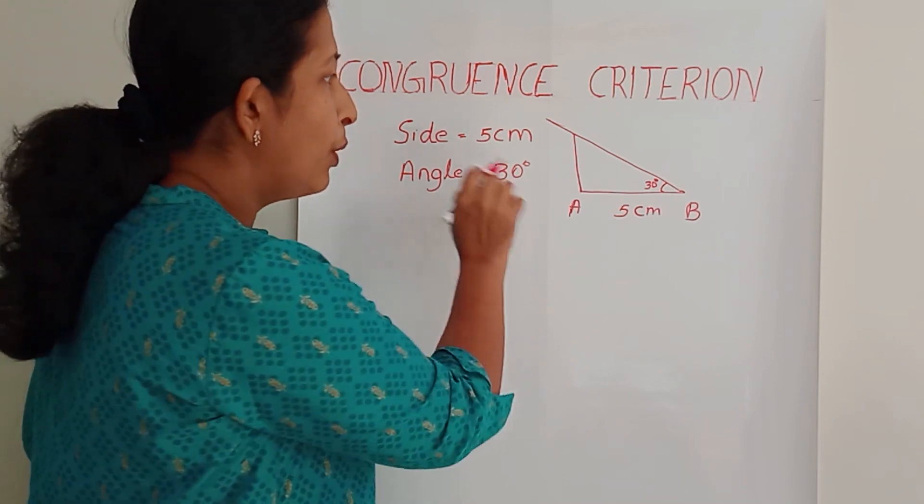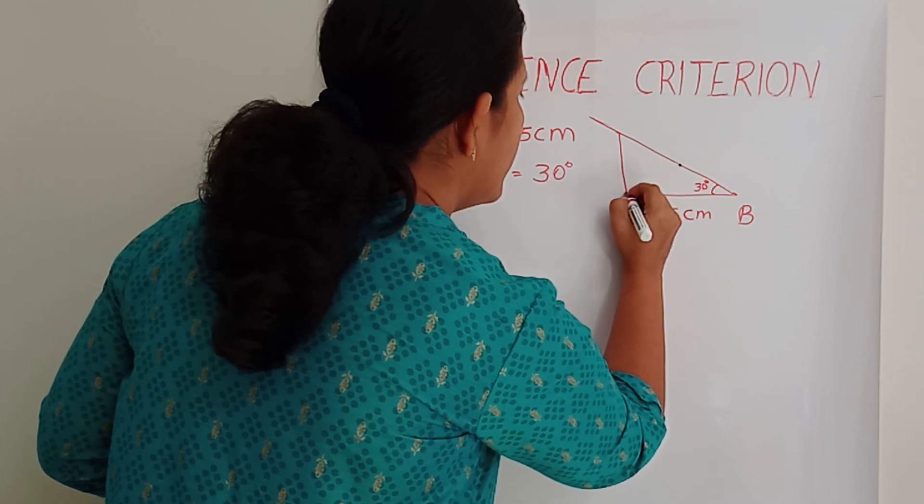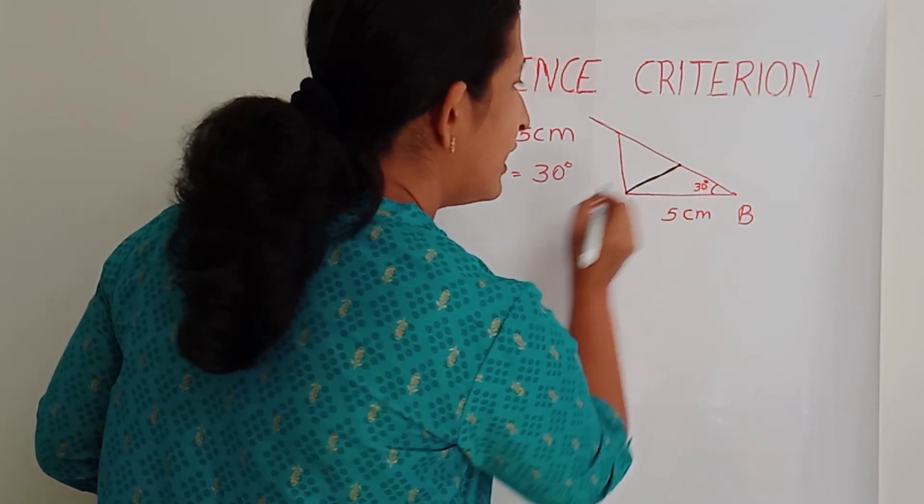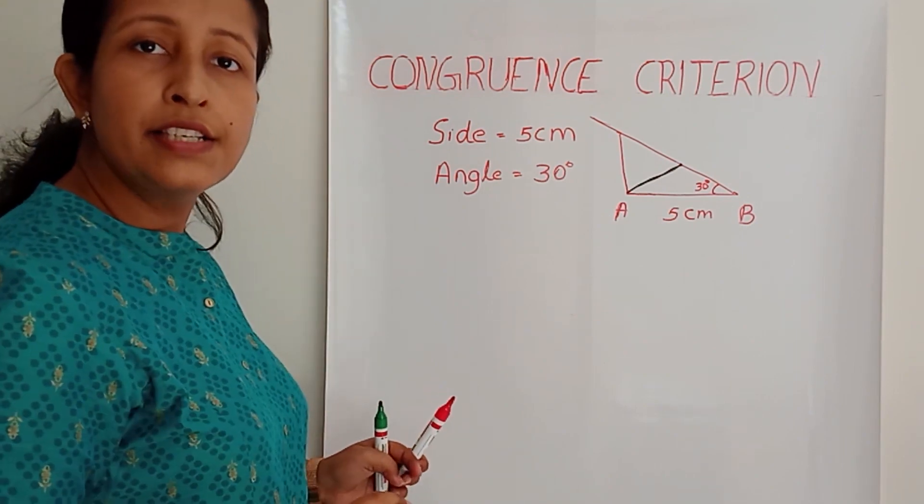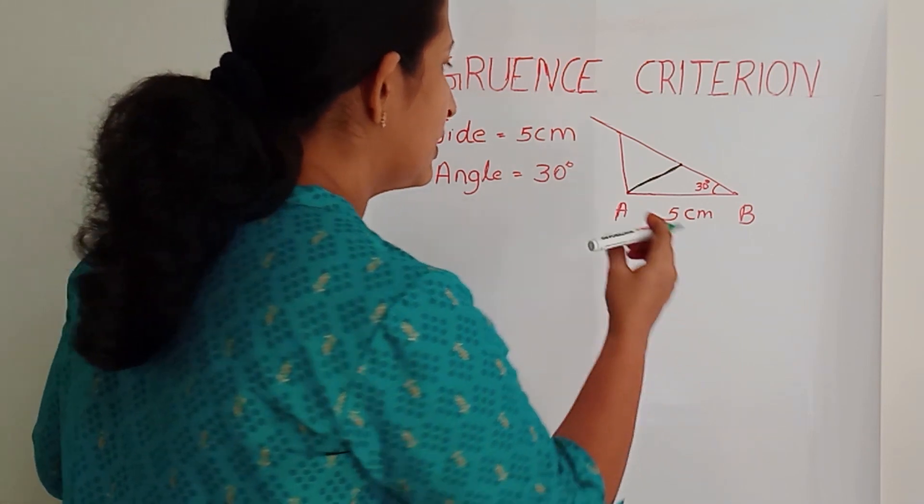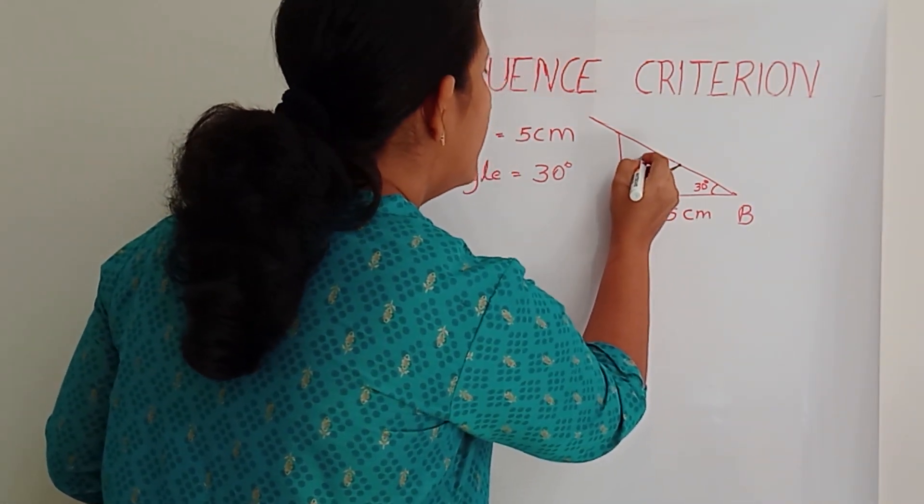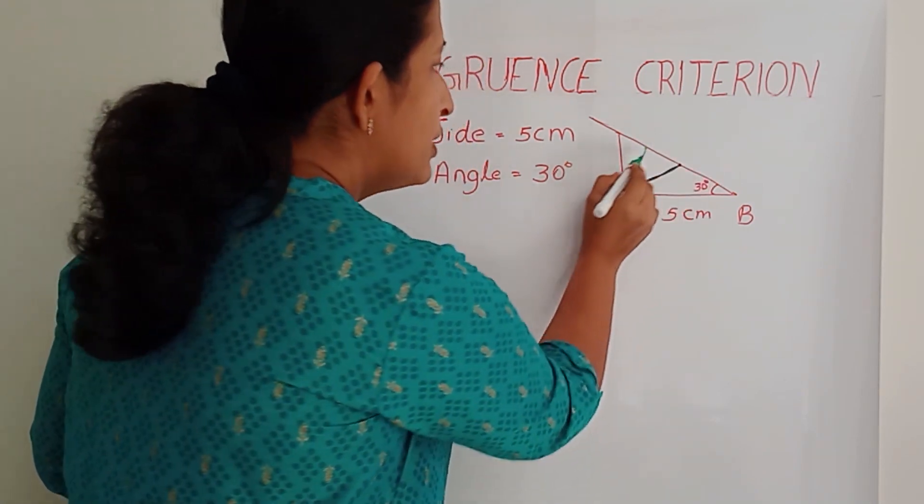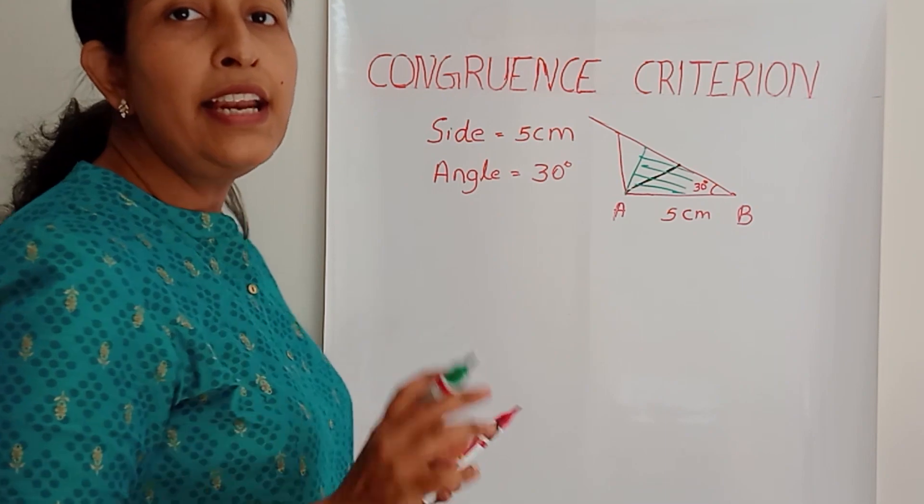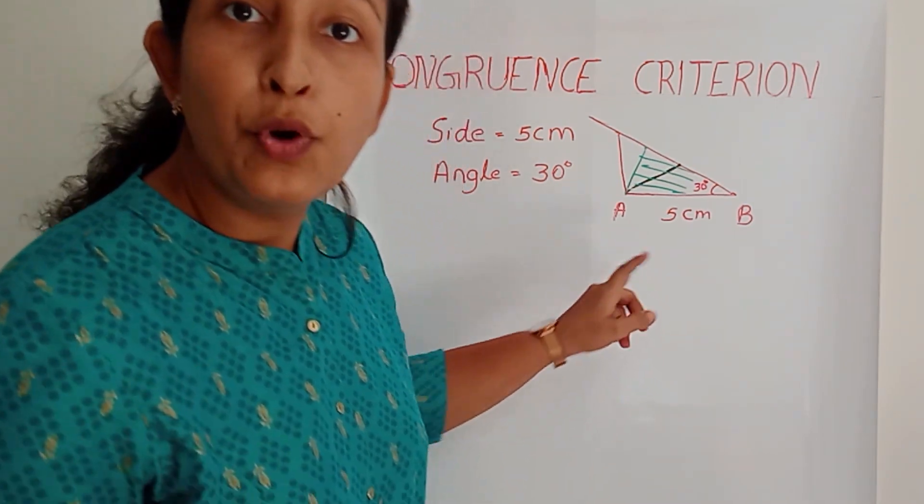Then Alan said, no, this is not my triangle. She joined from A to this point. Now this is her triangle. Again, Alan is not ready to answer this is my triangle. Anna again joined from this point to here. So this is her triangle now. Again, Alan is not ready to answer. So Alan is ready to give one more clue.